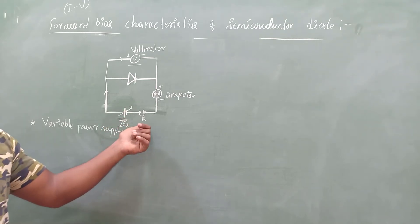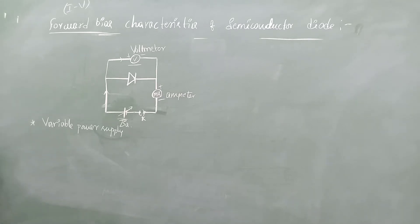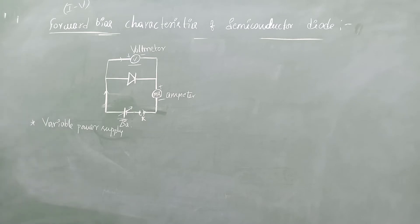That is the reason this symbol represents a variable power supply. So what will be the value of voltage as well as current? For the construction in the forward bias condition: the positive terminal of the battery is connected to the P side and the negative is connected to the N side. To find the voltage across the diode we have a voltmeter, and to find the value of current we have an ammeter. Now when I switch on the circuit, what happens?